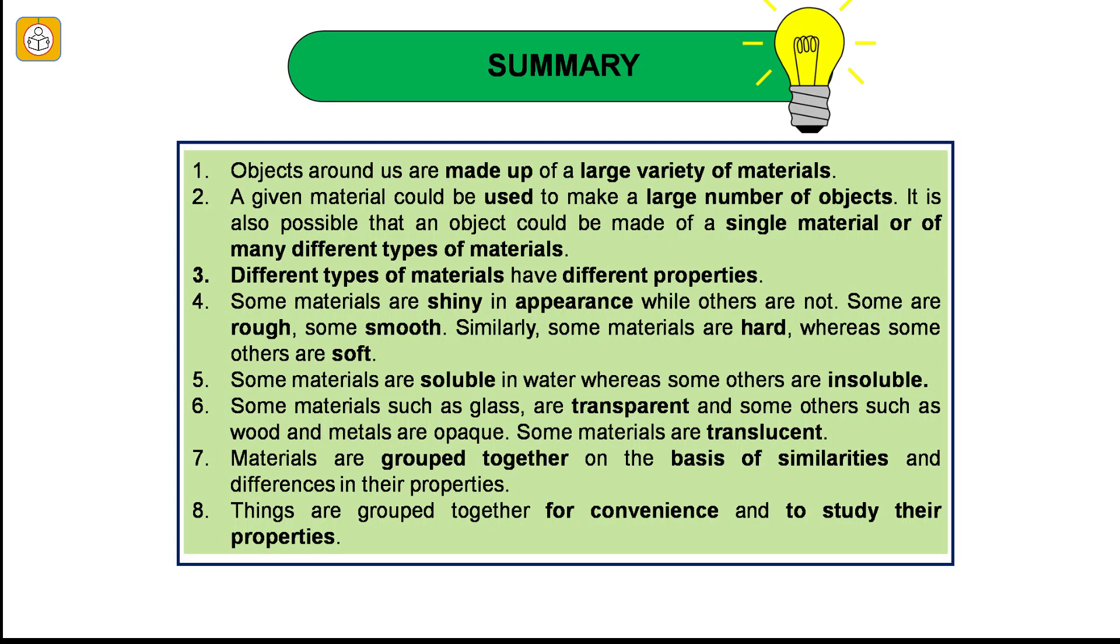Finally, we come to the end of the chapter. We have learnt that objects around us are made up of large variety of materials. A given material could be used to make a large number of objects. It is also possible that an object could be made of a single material or of many different types of materials. Different types of materials have different properties. Some materials are shiny in appearance while others are not. Some are rough, some smooth. Similarly, some materials are hard whereas some others are soft. Some materials are soluble in water whereas some others are insoluble. Some materials such as glass are transparent and some others such as wood and metals are opaque. Some materials are translucent. Materials are grouped together on the basis of similarities and differences in their properties. Things are grouped together for convenience and to study their properties.